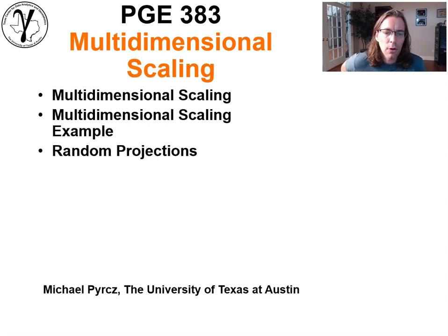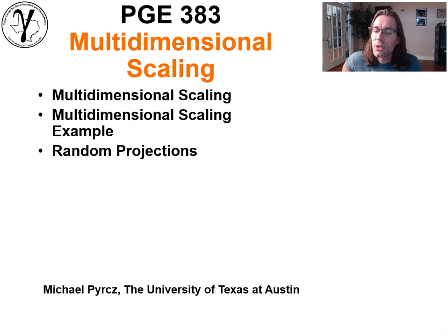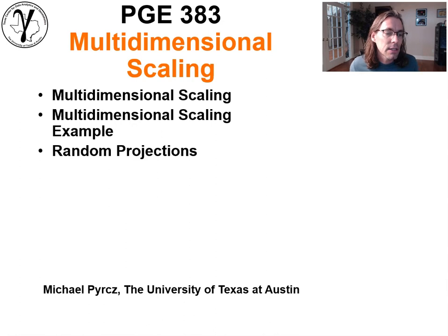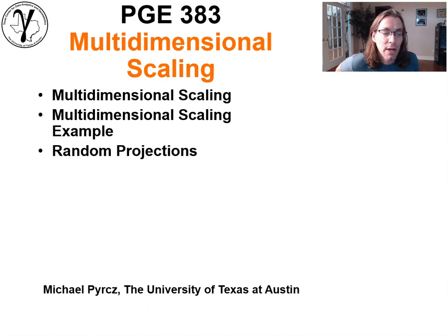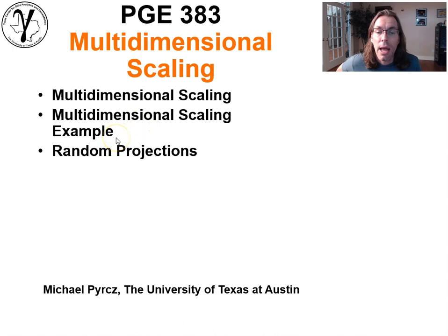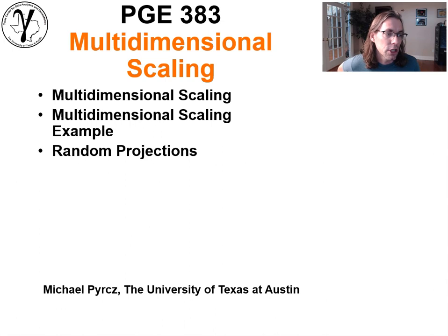Hey, howdy everyone, this is Michael Perch. I'm an associate professor at the University of Texas. This lecture continues our discussion around feature projection for the purpose of dimensionality reduction. We're going to talk about what I think is a really interesting alternative beyond principal component analysis that we covered last time, which is multidimensional scaling. We'll cover MDS, give an example, and I'll include another lecture afterwards on the concept of random projection.